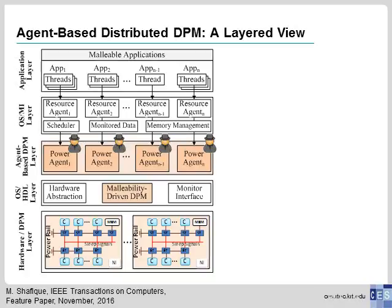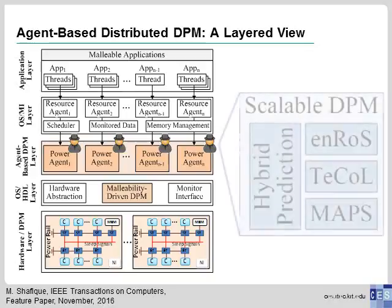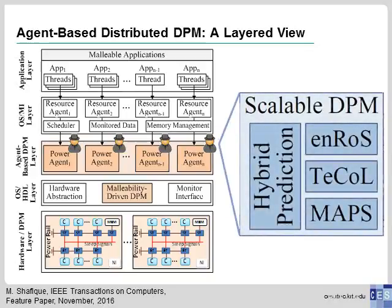To address this, we propose an agent-based distributed dynamic power management policy, which associates a so-called power agent to each application. This allows each application to autonomously manage its resources and the power states of those resources. Each power agent has four key blocks. The first is ENROSE — an energy-aware resource shrinking policy — that takes resource reservation and virtual power gating decisions by negotiating with other power agents. In case monopolization is hurting other applications, it can perform temporary core lending through the DECAL policy. MAPS runs at the lower level, where power states of different cores are managed autonomously by each power agent.